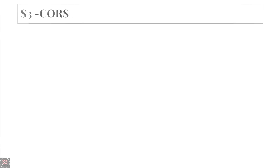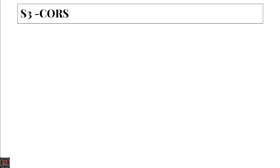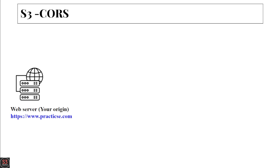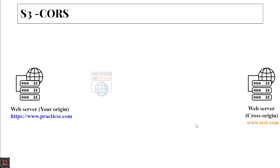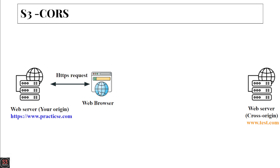For the working of CORS, we have our main origin which is https://www.practice.com and the other origin (also called the cross origin) which is www.test.com. The web browser makes a request to the main origin and gets the file it requested.